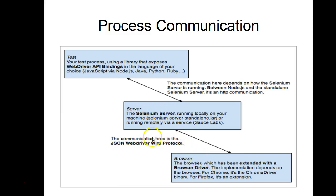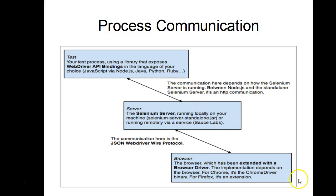The JSON WebDriver Wire Protocol is provided by Selenium WebDriver. The Selenium server knows how to interact with browser drivers because both the browser driver and Selenium server are provided by the Selenium team — so they defined a protocol called the JSON WebDriver Wire Protocol, which the server uses to interact with the browser. This is all about process communication within the Protractor architecture.